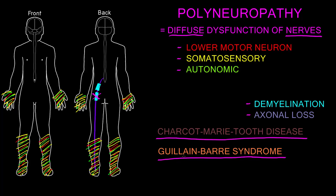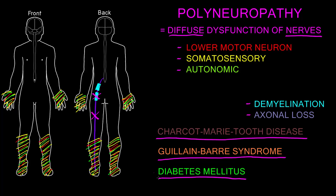By far and away the most common cause of polyneuropathy is from the metabolic disorder called diabetes mellitus — often just referred to as diabetes. This disorder involves blood sugars being too high on a long-term basis, and for reasons that aren't totally clear, that is very hard on the nerves. This usually causes the progressive loss of axons, making diabetic polyneuropathy primarily an axonal polyneuropathy, and it is by far the most common cause.